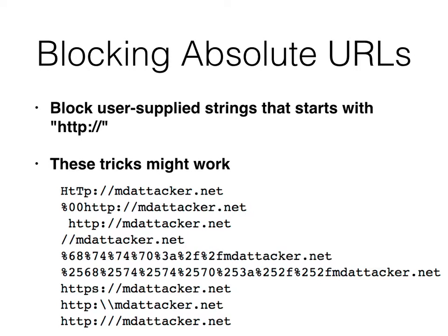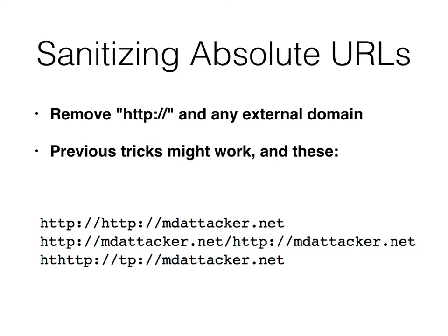Another thing is to add a specific absolute URL prefix so they're always on your server. One thing they might do is block all user-supplied strings that start with HTTP colon slash slash — and then you can try all the usual tricks: case sensitivity, null byte, put a space in there, omit the HTTP but start with slash slash, URL encode the HTTP, use backslashes, use HTTPS. If they filtered it in some way, they might not have been careful enough to filter all the variations. Another thing is to sanitize URLs by removing HTTP colon slash slash in any external domain — but you can often fool that by putting it in twice so it removes one and there's one left.